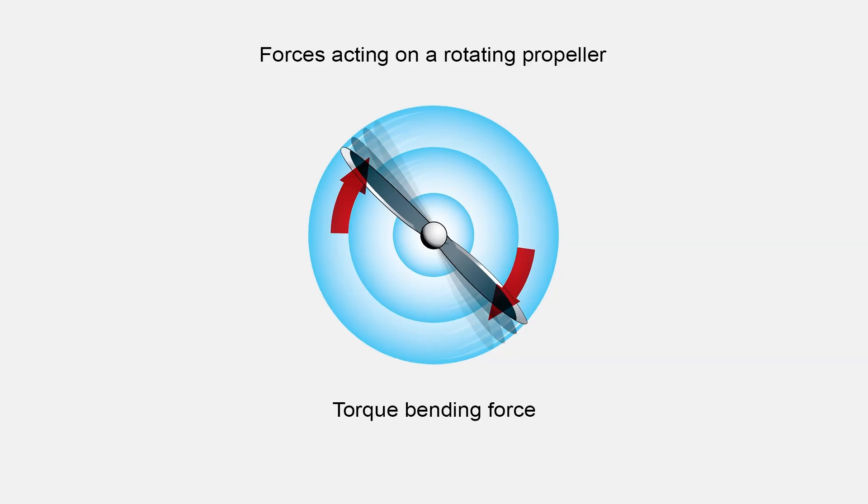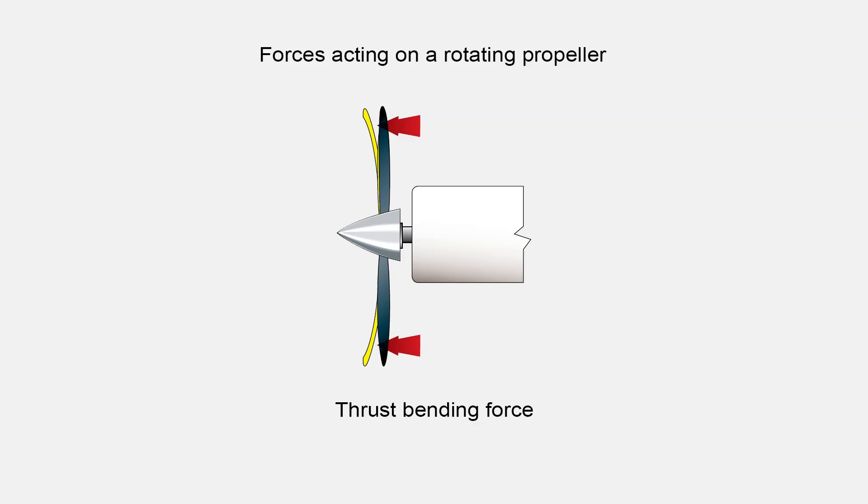Torque bending force, in the form of air resistance, tends to bend the propeller blades in the direction opposite that of rotation. Thrust bending force is the thrust load that tends to bend propeller blades forward as the aircraft is pulled through the air.